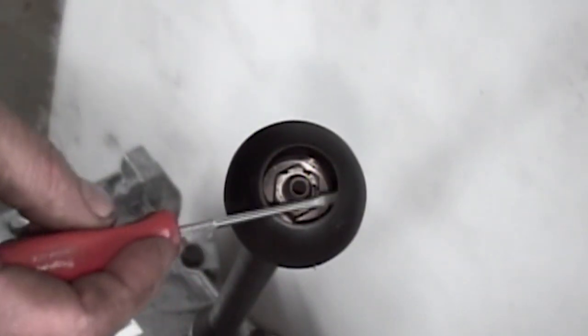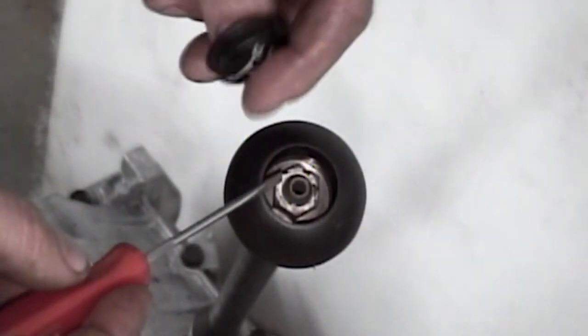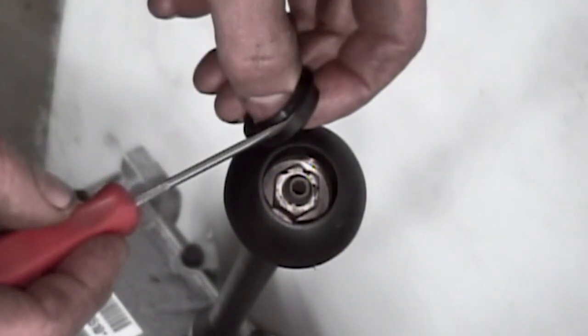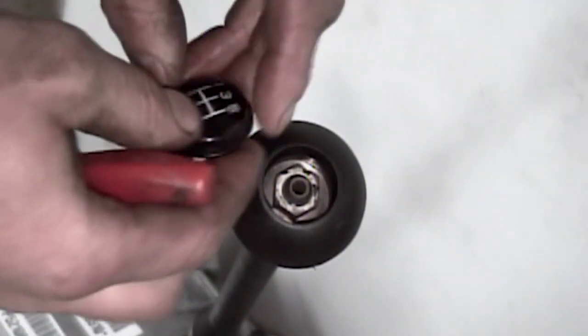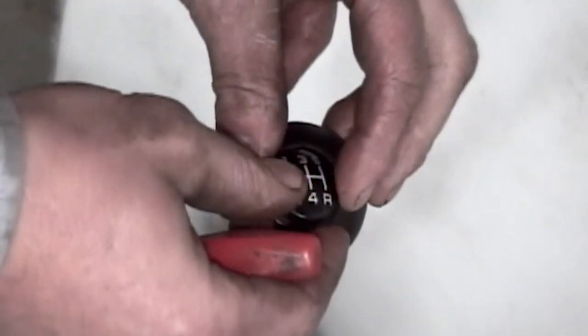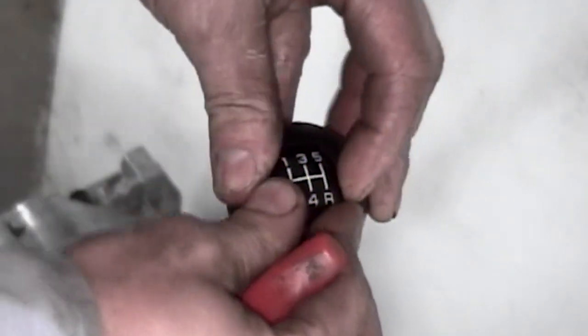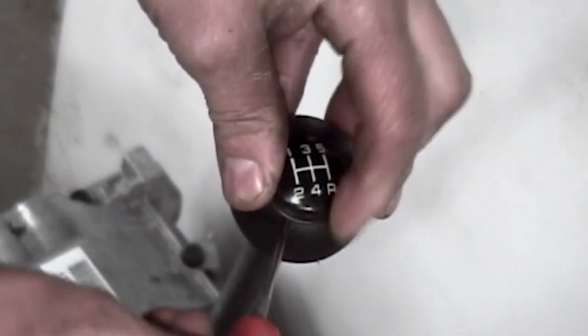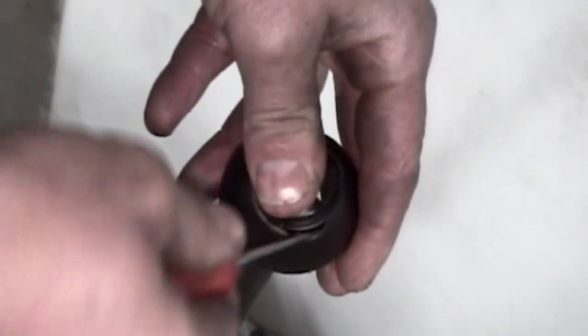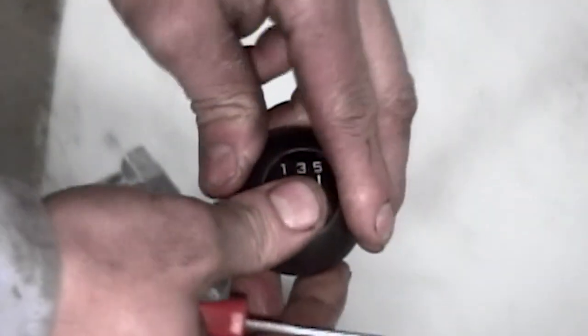Observe the groove in the shift knob and the lip on the shift insert. Start the lip of the insert into the groove. Use a small screwdriver to pry the edge of the knob over the lip. Push the insert in until seated.